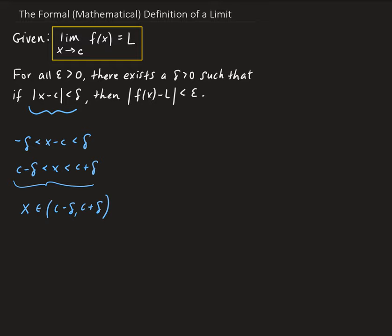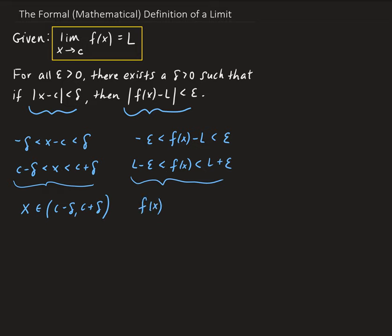We can approach the second part the same way. The absolute value of f of x minus l less than epsilon is equivalent to minus epsilon less than f of x minus l less than epsilon. Isolating f of x by adding l to both sides, we get l minus epsilon less than f of x less than l plus epsilon. So f of x belongs to a neighborhood with lower bound l minus epsilon and upper bound l plus epsilon.